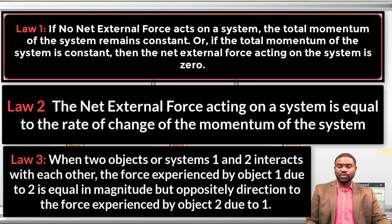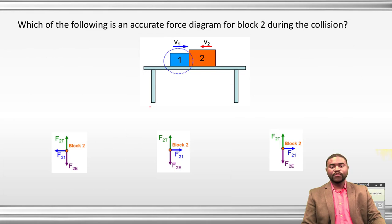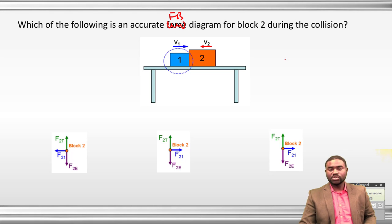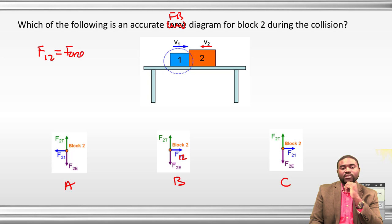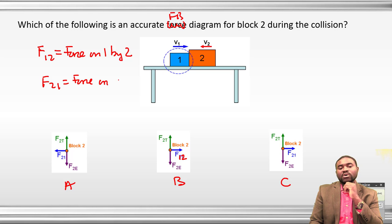Let's start with this question: which of the following is an accurate free body diagram for block two during a collision? Keep in mind that F12 is the force on one by two, and F21 is the force on two by one.